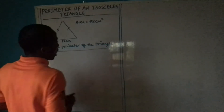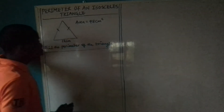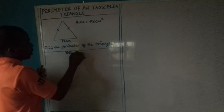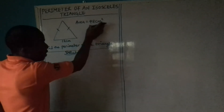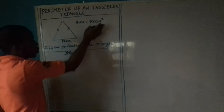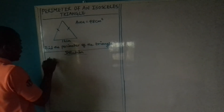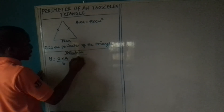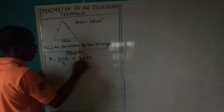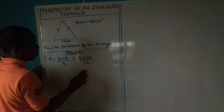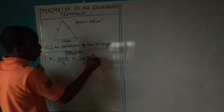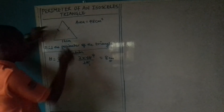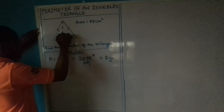To work out one of its equal sides, we need to know the height of this triangle. It is very easy to get the height. What you simply need to do is multiply the area by 2, then divide by the base. So the height equals 2 times the area divided by the base — that is 2 times 48 divided by 12. Since 12 goes into 48 four times, and 4 times 2 gives us 8 cm, the height of this triangle is 8 cm.